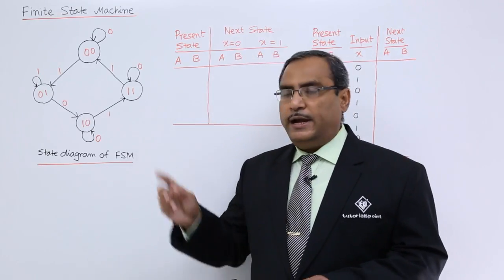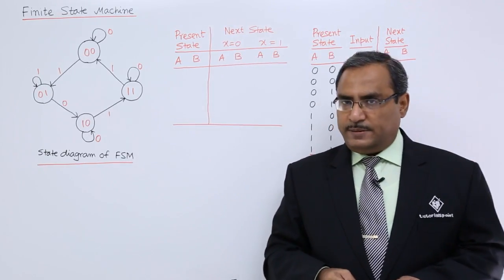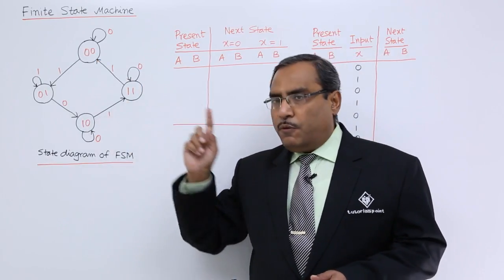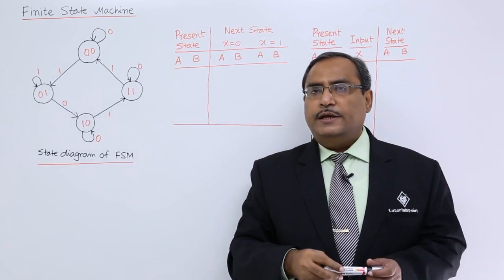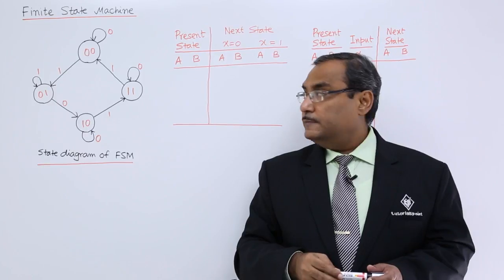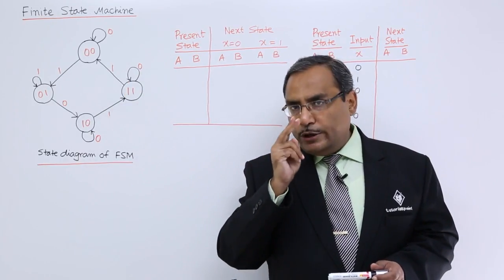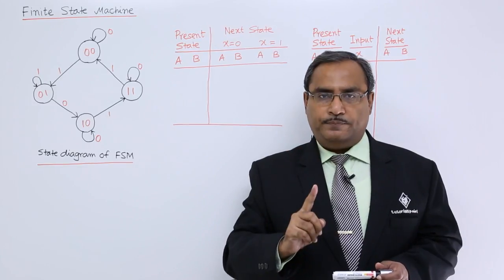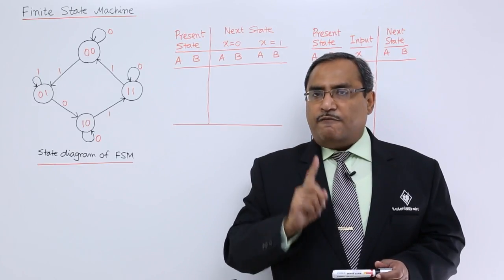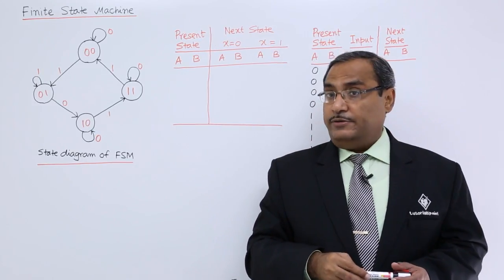Here is the state diagram of one FSM. You can find that it is having four states, obviously it is finite number of states will be there. It is having finite number of inputs - it is having only two inputs that is 0 and 1, and it is having finite number of state transitions.